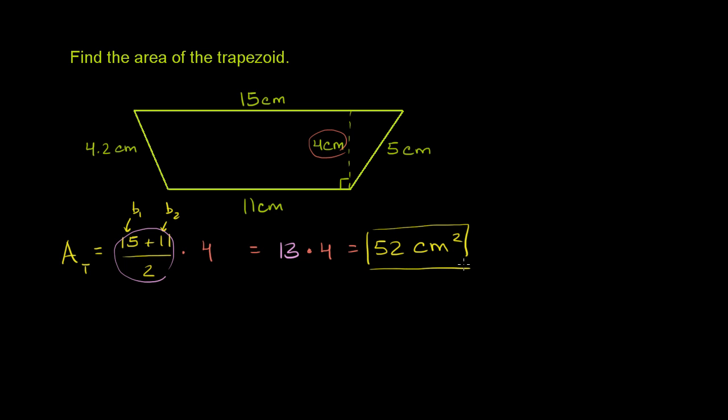And if you're wondering, why does this formula make sense? One way to think about it is, imagine you were to take the area using just this base. So if you look at the rectangle that has this base and that height, you would have this area that I'm showing you in white. If I just took 11 times 4, you would get this area right over here.